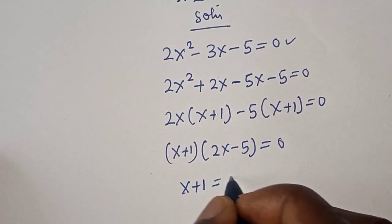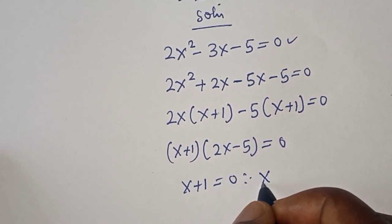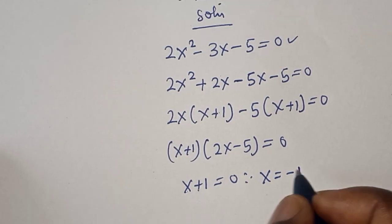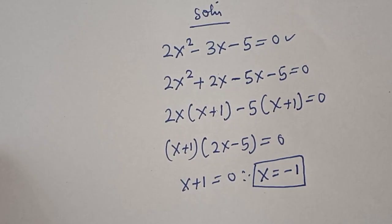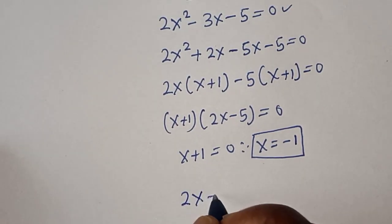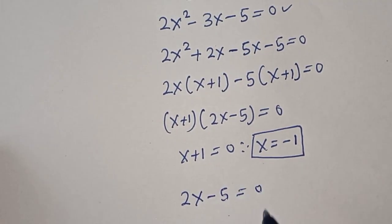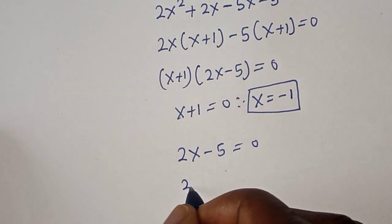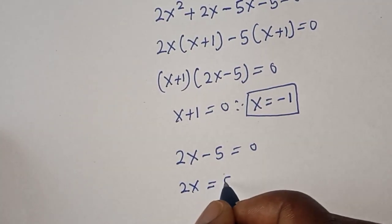x + 1 = 0, therefore x = -1. For the second case, we have 2x - 5 = 0, so 2x = 5.